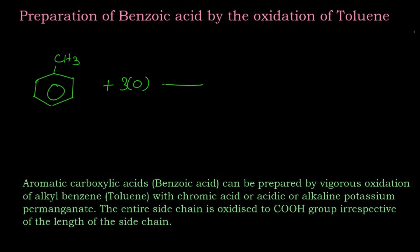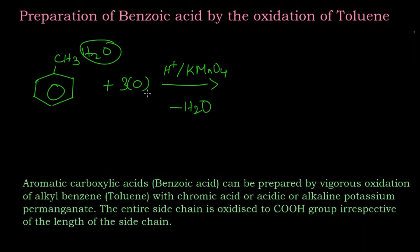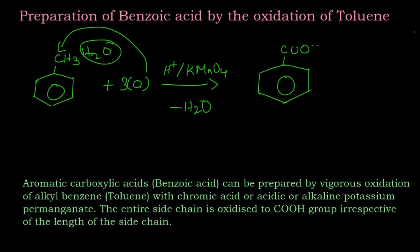The strong oxidizing agent is acidified potassium permanganate, KMnO4. What happens here is that two hydrogens and one oxygen are removed as H2O. The remaining two oxygens get attached to this carbon, so we get COOH — that is benzoic acid. This is toluene oxidized in presence of a strong oxidizing agent to give benzoic acid.